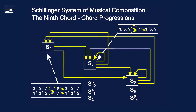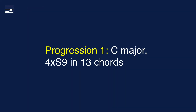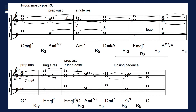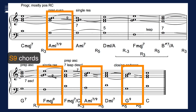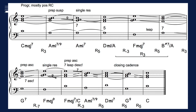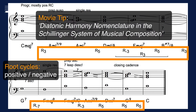And now it's time for some examples. The first progression consists of 13 chords in the key of C major, containing 4 ninth chords. In the score we see the 4-part setting, the chord labeling, root cycles and voice leading specifics. These are the 9th chords that need preparation and resolution. All are in root position and contain chordal functions 1, 3, 7 and 9.